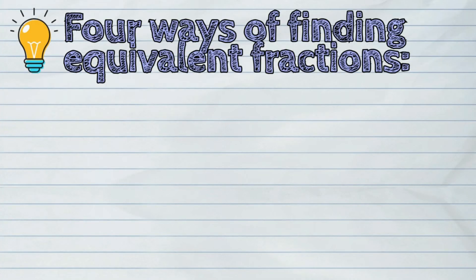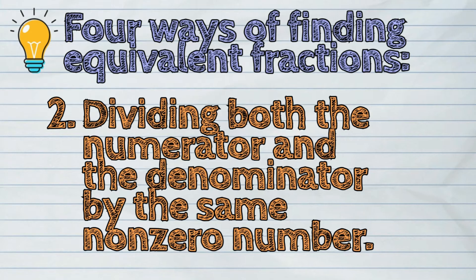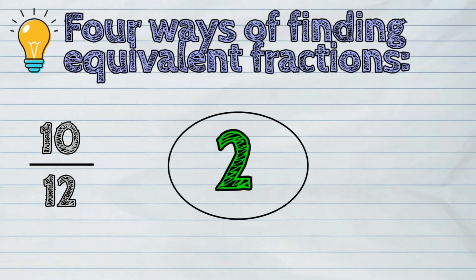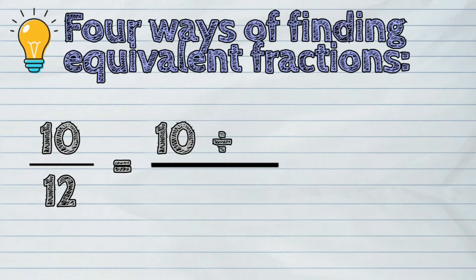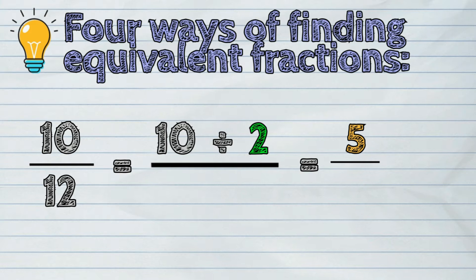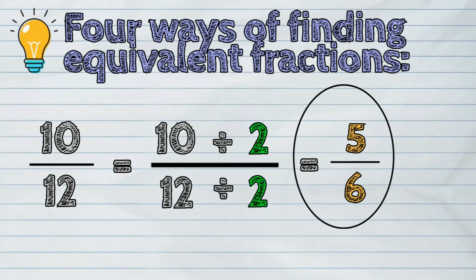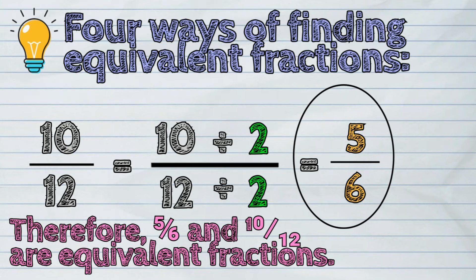The second way is dividing both the numerator and the denominator by the same non-zero number. Example: let us divide the fraction ten-twelfths by two. Numerator ten divided by two is five. Denominator twelve divided by two is six. So the final answer is five-sixths. Therefore, five-sixths and ten-twelfths are equivalent fractions.